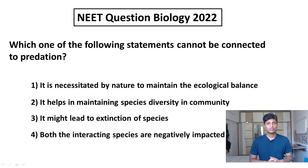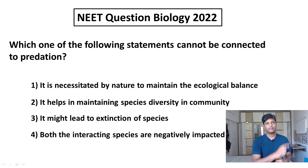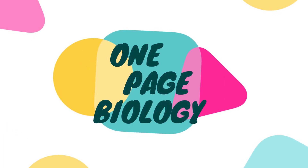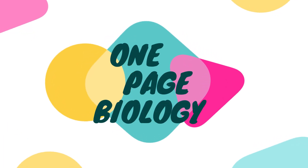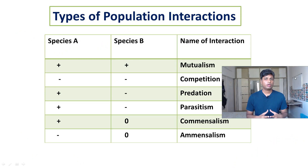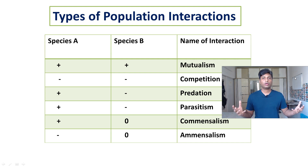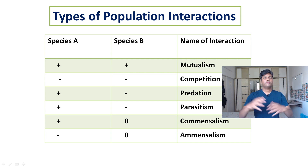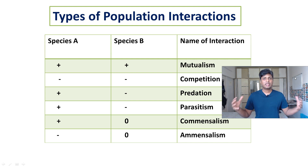To answer this question we have to understand the concept of predation. When we talk about population, what exactly is population? Population is basically a group of organisms. When we talk about population in general, there are so many different types of species which are present in this entire world.